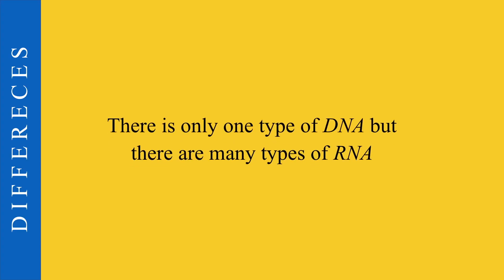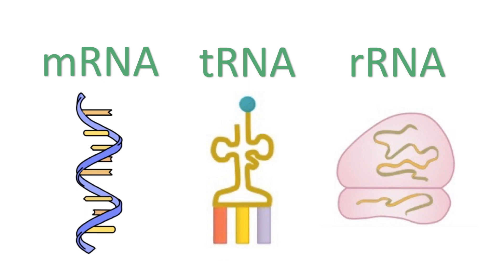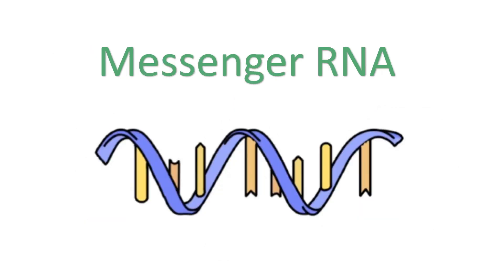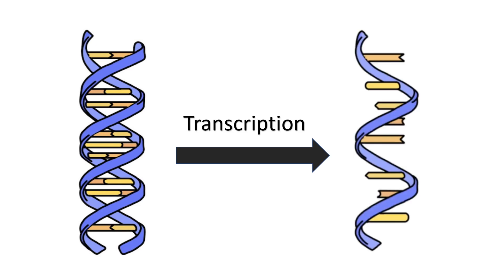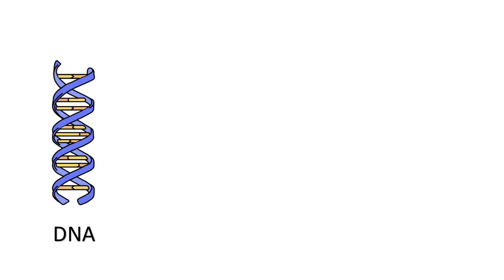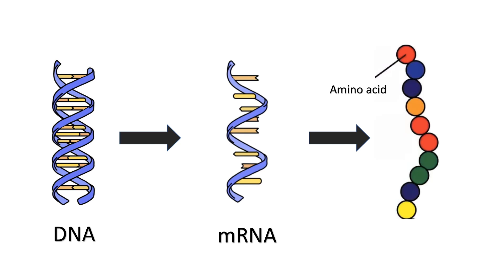The fourth difference between DNA and RNA relates to their types. There is only one type of DNA, but there are several types of RNA. The main three are mRNA, tRNA, and rRNA. mRNA stands for messenger RNA. It is created during transcription, and its main function is to act as an intermediary molecule between the genetic information found in DNA and the amino acids found in proteins. Basically, mRNA transports the genetic message from the nucleus into the cytoplasm, so it can be read by rRNA to make proteins.